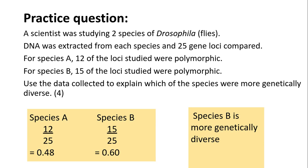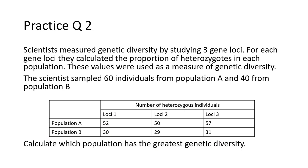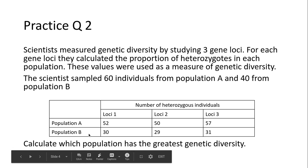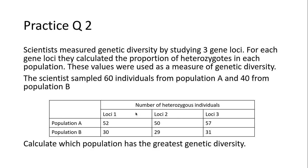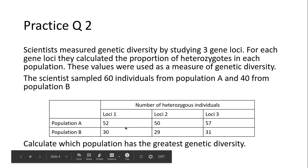Now there are more complicated questions. We have two populations A and B, and we have three different loci — so we're not just looking at one position but three different loci. We know that there were 60 individuals looked at for population A and 40 for population B. You need to work out an average for each population.